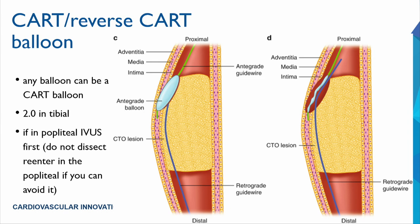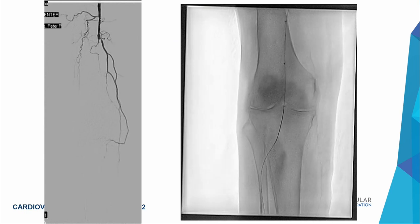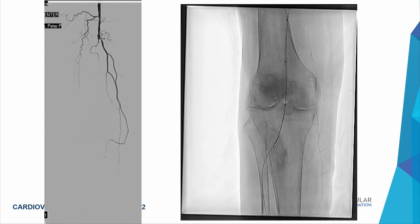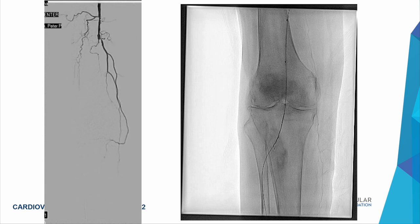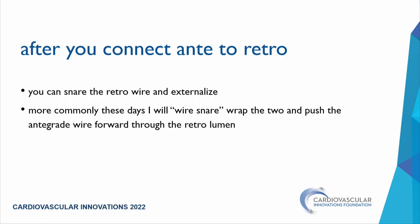I strongly believe in the wire-to-wire rendezvous technique. If that fails, CART or reverse CART uses a balloon antegrade or retrograde to open a path. Be cautious — avoid ballooning in the extravascular space in the popliteal. IVUS added to CART confirms both wires are intraluminal. This was demonstrated in a nice CART case with trifurcation obliteration, using retrograde balloon from the foot allowing wire passage distally.